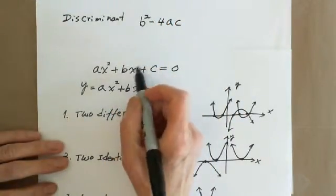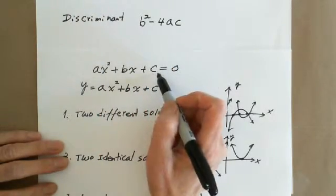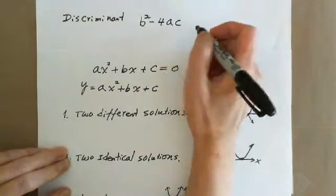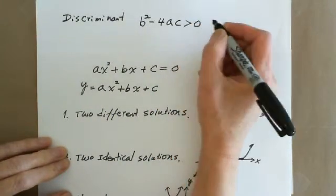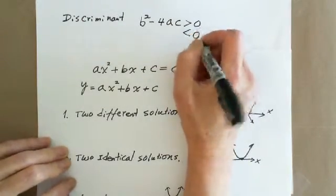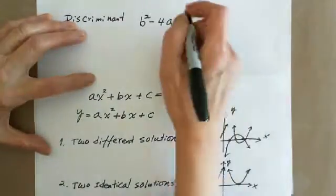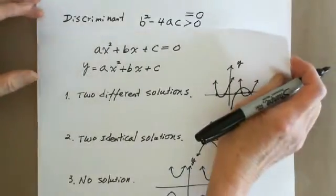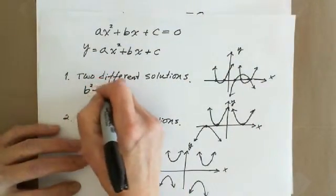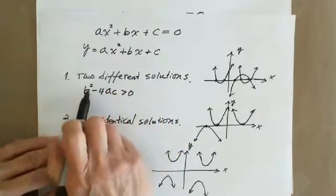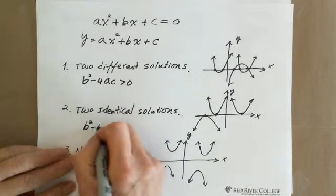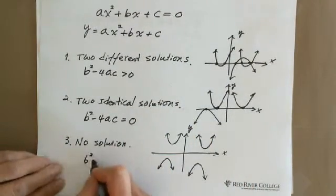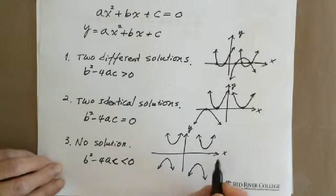The b is the coefficient of x, a is the coefficient of x squared, and c is the constant. The discriminant b squared minus 4ac can be greater than zero, less than zero, or equal to zero — three different situations. If b squared minus 4ac is greater than zero, we have two different solutions. If b squared minus 4ac equals zero, we have two identical solutions. If b squared minus 4ac is less than zero, there is no solution.